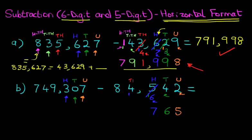Onto the thousands. We've got not 4, but we've got 5 thousands. What is our target? We need to get to 9. So what number added to the 5 is going to give us 9? The answer is 4. 5 plus 4 is 9, and because it's 9, we are not carrying anything over.